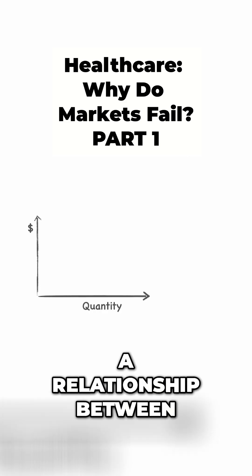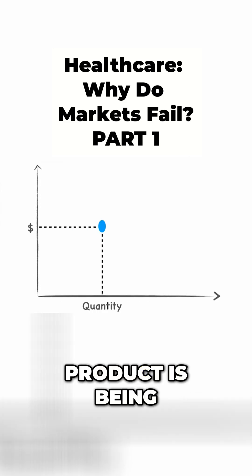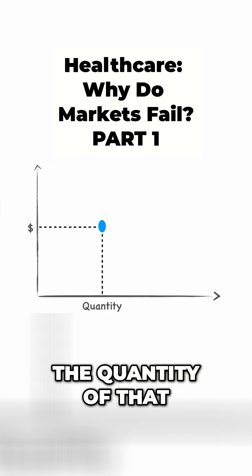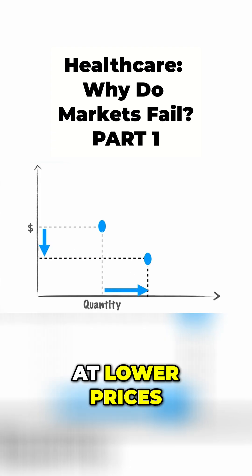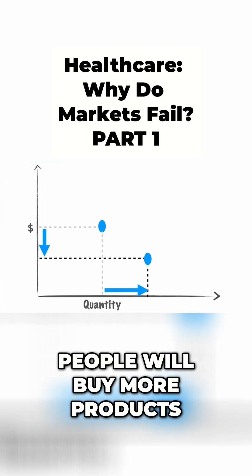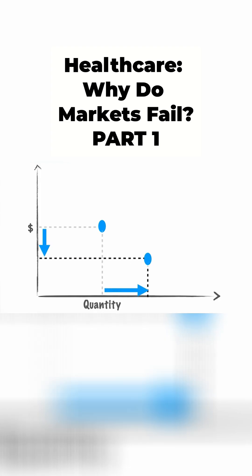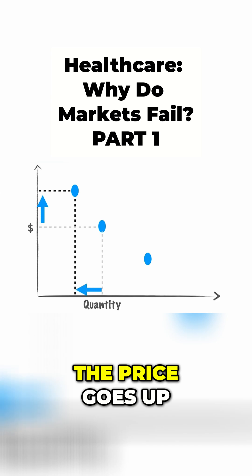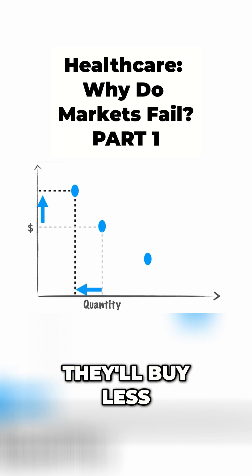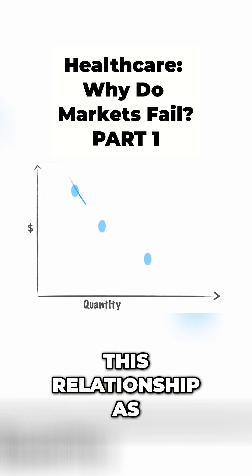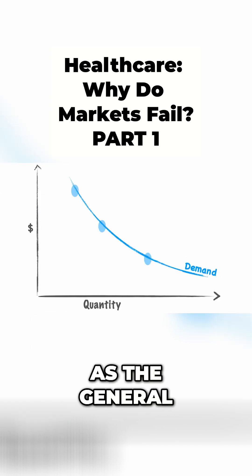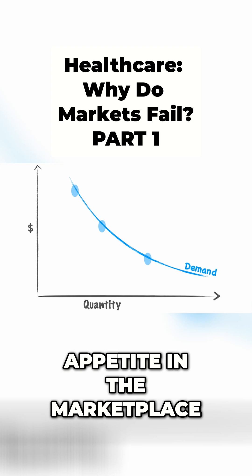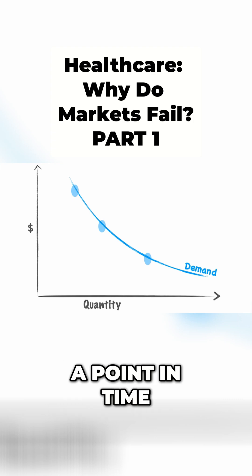There is a relationship between the price that a product has been sold for and the quantity of that product that consumers will buy. At lower prices, people will buy more products, and if the price goes up, they'll buy less. We think of this relationship as the demand curve — think of it as the general appetite in the marketplace for a product at a point in time.